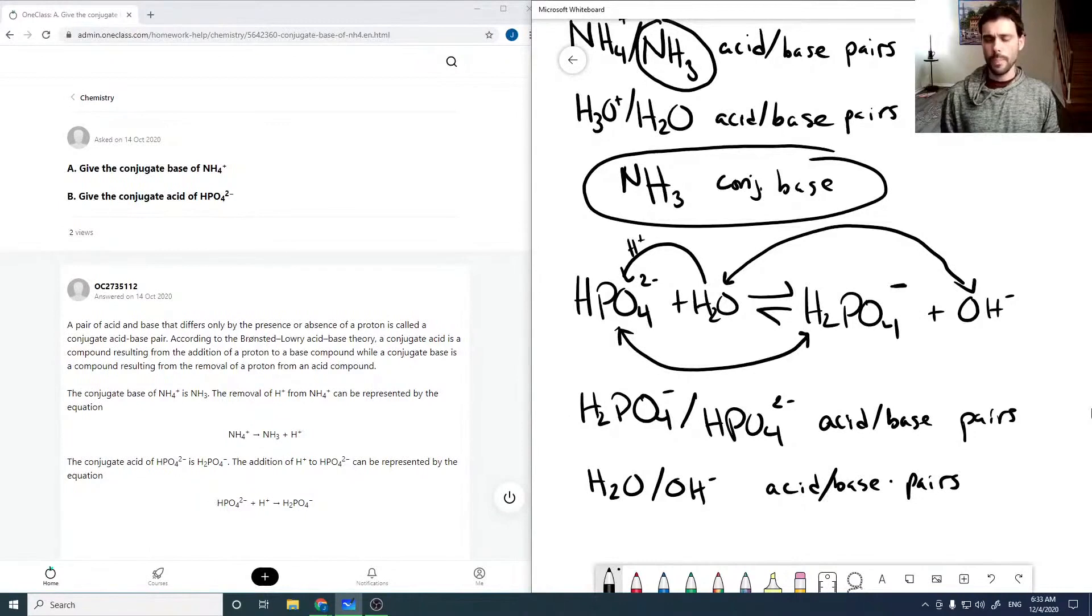So we're looking for the conjugate acid of HPO4 2-. That would be H2PO4-. So H2PO4- is our conjugate acid.